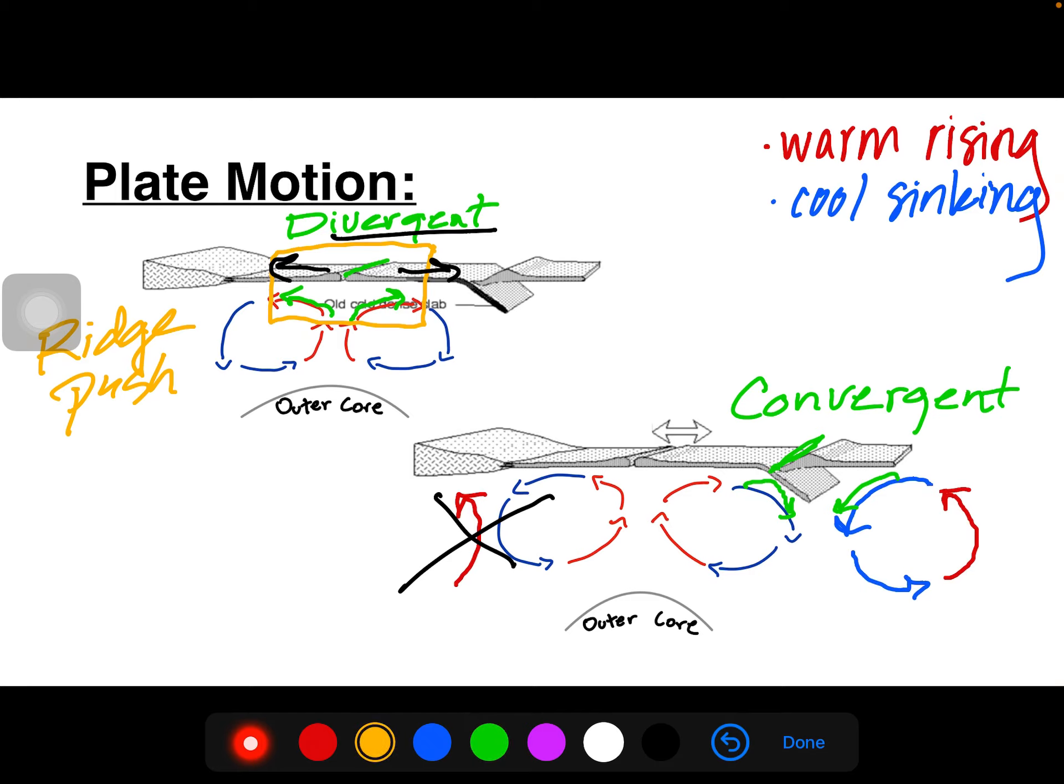And this is the force of slab pull. Again, this force is describing the motion of the convection that creates the motion on the surface. So slab pull is describing the cool, sinking mantle material coming together and pulling down, allowing the crust on the surface to move in that same way and sink down into the mantle.